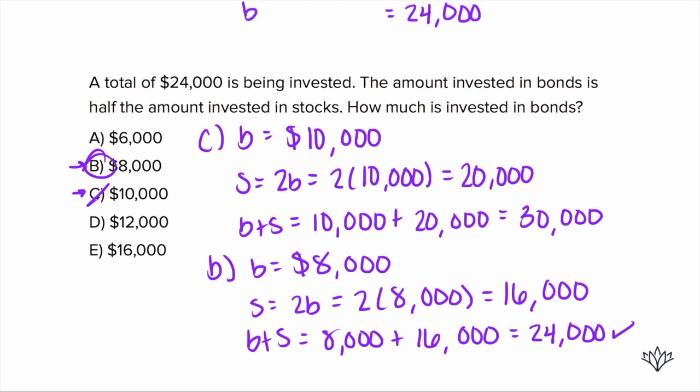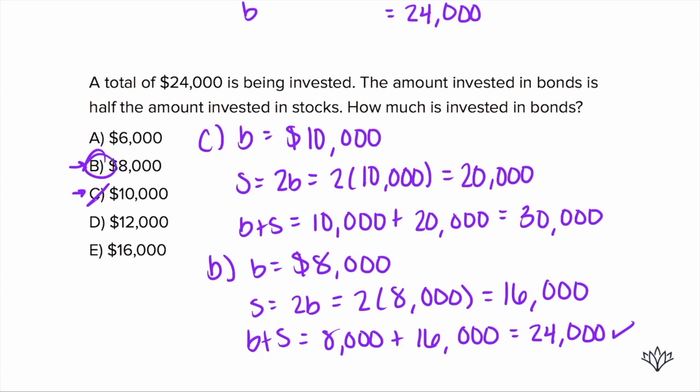It says the bonds is half the amount invested in the stocks. So if the bonds amount is half of what's invested in stocks, what can we do? We know that the amount invested in stocks, our S, has got to be 2 times whatever was invested in bonds. So really what we have is bonds and then stocks, but the stocks is 2 times B. So we can write bonds plus 2 times bonds equals $24,000.